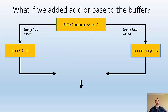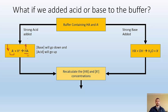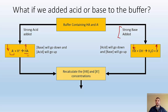What if we added acid or base to the buffer? If I had a buffer with acid and conjugate base and added some strong acid, it's going to get neutralized by some of my base, making more of the acid. So the amount of base goes down and the amount of acid goes up — I need to recalculate the new acid and base concentrations. If I add strong base, it's neutralized by some of my acid, making more conjugate base. So acid goes down and base goes up, and I recalculate the new concentrations.